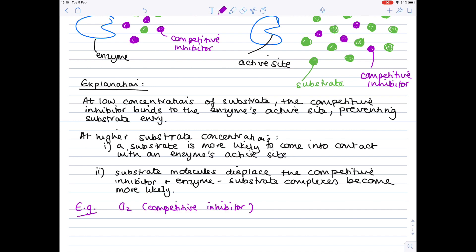And a key example here is oxygen, which is a competitive inhibitor, and it competes with carbon dioxide for access to the active site of the enzyme rubisco.